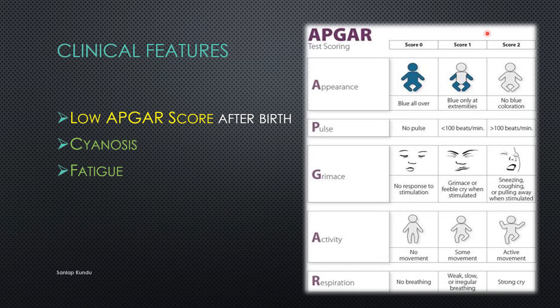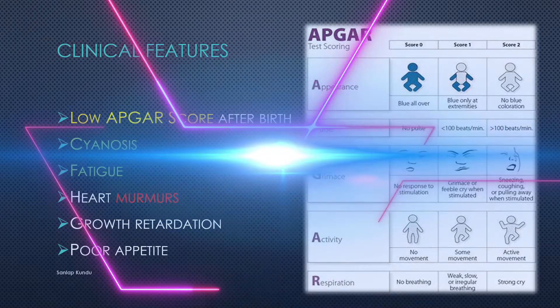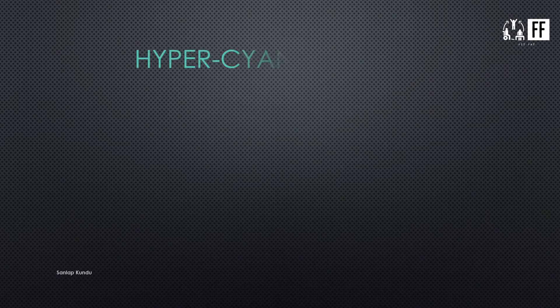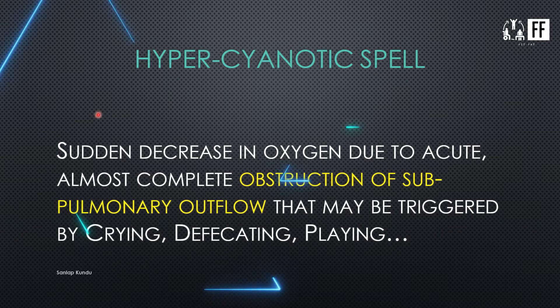Third is fatigue, as CO2 accumulation means oxygen concentration in the blood is low, making fatigue a common symptom. Then there are heart murmurs, growth retardation, and poor appetite. Hypercyanotic spells are also common in these children — a sudden decrease in oxygen due to acute, almost complete obstruction of the sub-pulmonary outflow, which may be triggered by crying, defecating, or playing.